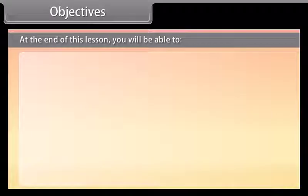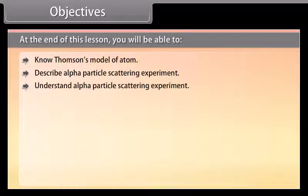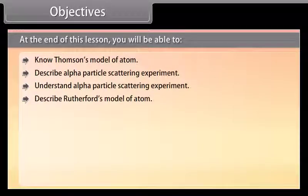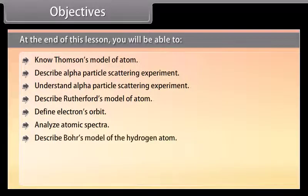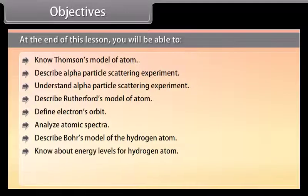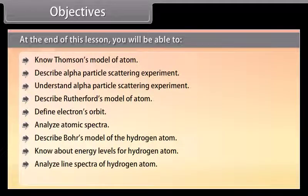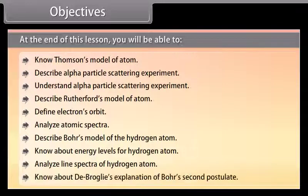At the end of this lesson, you'll be able to: know Thomson's model of the atom; describe and understand the alpha particle scattering experiment; describe Rutherford's model of the atom; define electron's orbit; analyze atomic spectra; describe Bohr's model of the hydrogen atom; know about energy levels of the hydrogen atom; analyze line spectra of the hydrogen atom; and know about De Broglie's explanation of Bohr's second postulate.